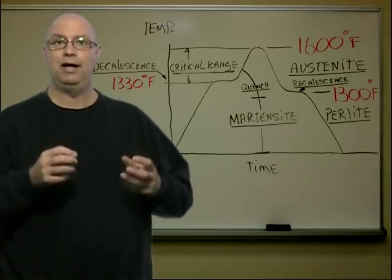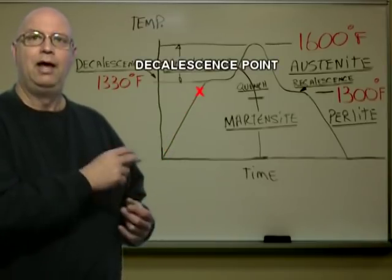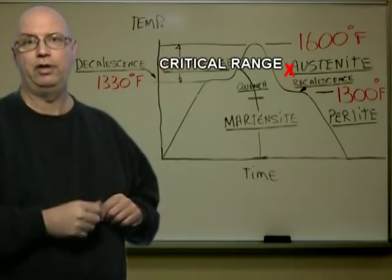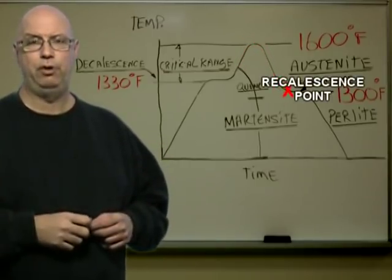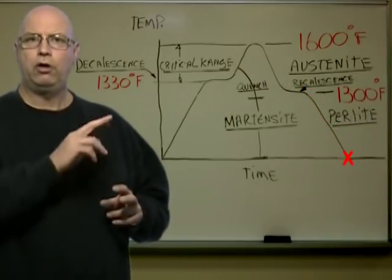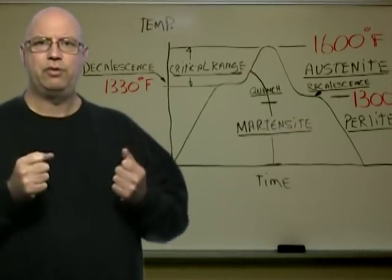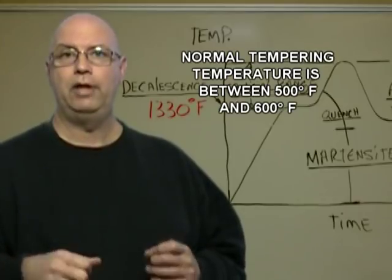Tempered martensite is martensite that has had its strains and stresses reduced. To summarize the full cycle: we start with perlite, heat it to the decalescence point to become austenite, then either cool it slowly through the recalescence point to return to perlite, or quench it rapidly to produce martensite. Martensite is hardened steel, but it is also unstable — prone to deformation and cracking because it is very stressed.